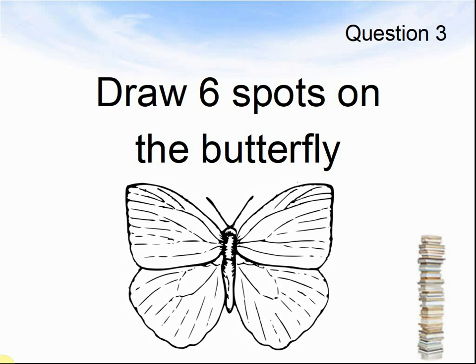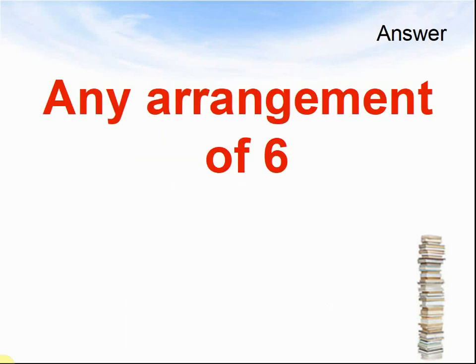Let's look at the next question. Question 3. Draw 6 spots on the butterfly. You can draw a quick butterfly in your book or on your paper and then draw 6 spots on the butterfly. Pause the video until you are ready for the answers. Here come the answers. Any arrangement of 6. So count your spots: 1, 2, 3, 4, 5 and 6.